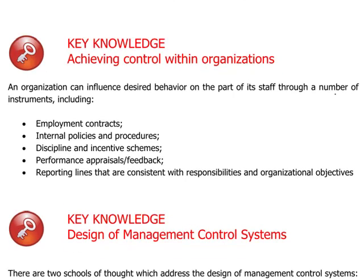If one were to make a spontaneous list of the sorts of things that a company must have in place in order to exercise proper supervisory functions, we could imagine that they would include employment contracts, so that the relationship with employees and expectations are properly documented and formed, as well as internal policies and procedures — perhaps a policy handbook or staff handbook outlining the rules with regard to the functionings of the organization.